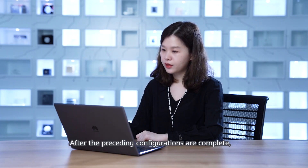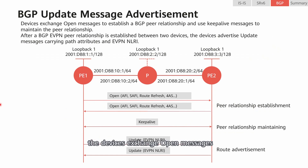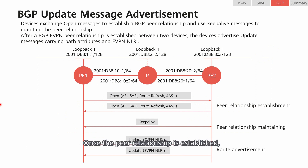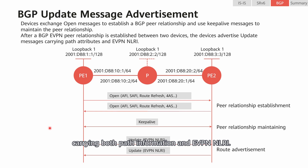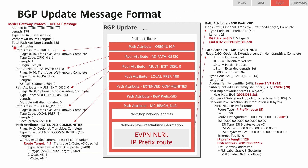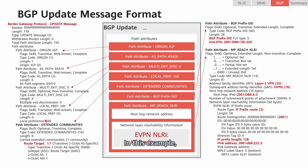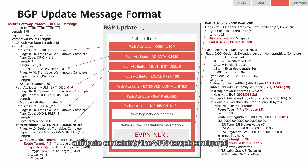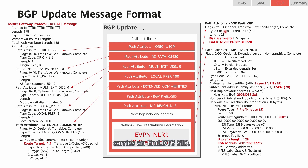After the preceding configurations are complete, the devices exchange Open messages to establish a BGP peer relationship and use Keepalive messages to maintain it. Once the peer relationship is established, the devices exchange Update messages carrying both path information and EVPN NLRI. Let's look at the format of a BGP Update message. This message carries common path attributes such as Origin, AS_Path, MED, and LocalPref. We can also see that the message carries the extended communities attribute containing the VPN target configured for the corresponding VPN instance, and the BGP prefix SID attribute carries an End.DT6 SID.